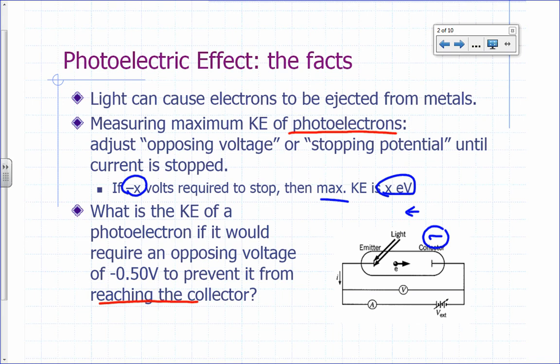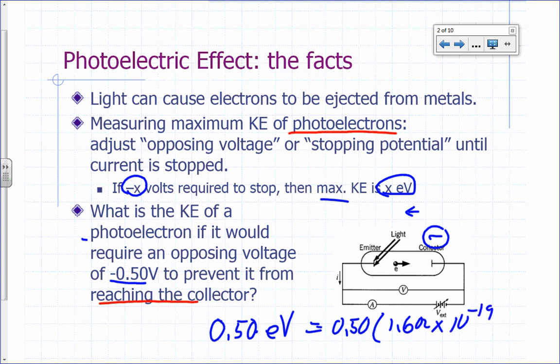That's the maximum kinetic energy from the surface for that particular wavelength of light you're using. For example, what would be the kinetic energy of the photoelectron if you require an opposing voltage of negative 0.5 volts? That would be 0.5 electron volts, which in joules would be 0.5 times 1.602 times 10 to the negative 19 joules, because an electron volt is 1.602 times 10 to the negative 19 joules.